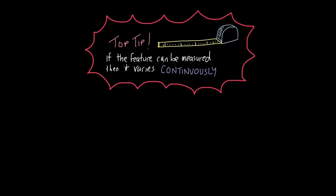One top tip I'd like to leave you with is if the feature can be measured, then it varies continuously. So think about things that can be measured: height, hand span, foot length, thigh length, arm span. All these things will vary continuously.